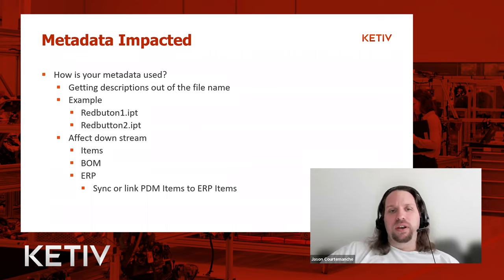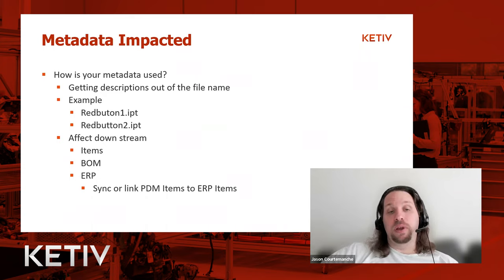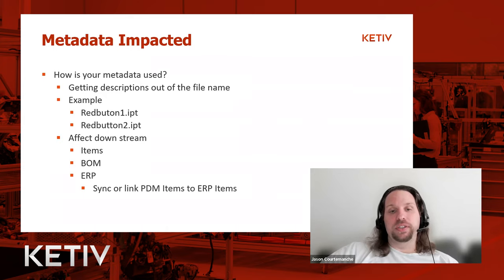Metadata also impacts downstream items. We can get metadata to show up on a file in Vault, but also on an item. Once metadata shows up on an item, we can enable that column on the BOM. And once we have the metadata there, we can export or link to PLM or ERP systems.